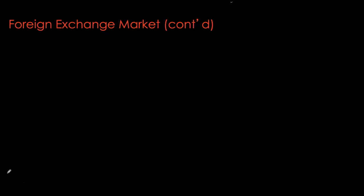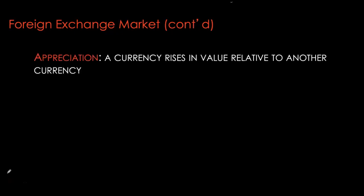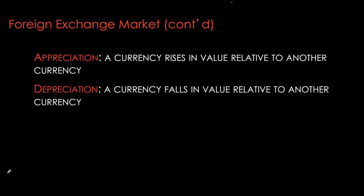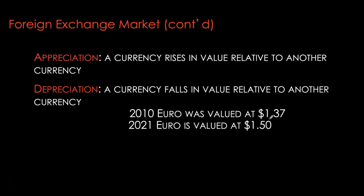Recall that the exchange rate is simply the price of one currency in terms of the other. When the value of a currency goes up in terms of the other, it's called appreciation, and when it falls in value relative to the other currency, it is called depreciation. For example, here I have the exchange rate for the euro expressed as how many dollars we get for each euro — the dollar per euro exchange rate. In 2010, we had the exchange rate at $1.37, and in 2021 it's $1.50.